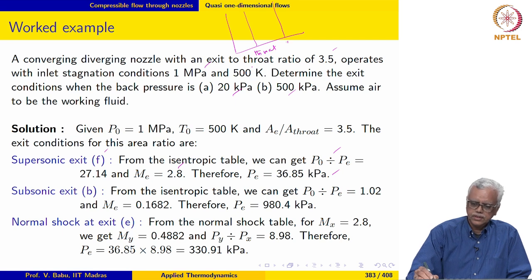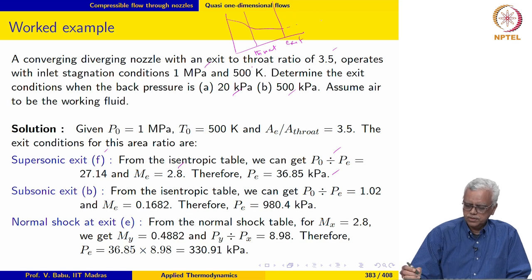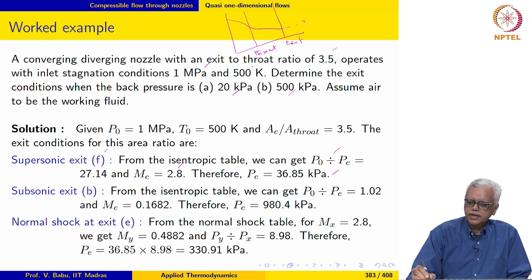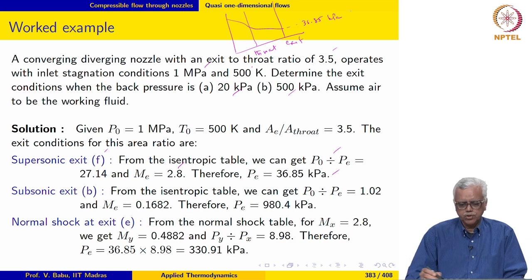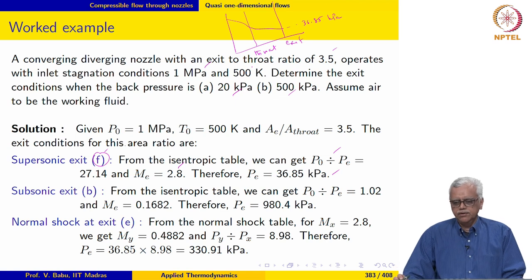Plotting the nozzle from throat to exit, the supersonic solution gives an exit pressure of 36.85 kPa. This corresponds to solution F from the previous graph.